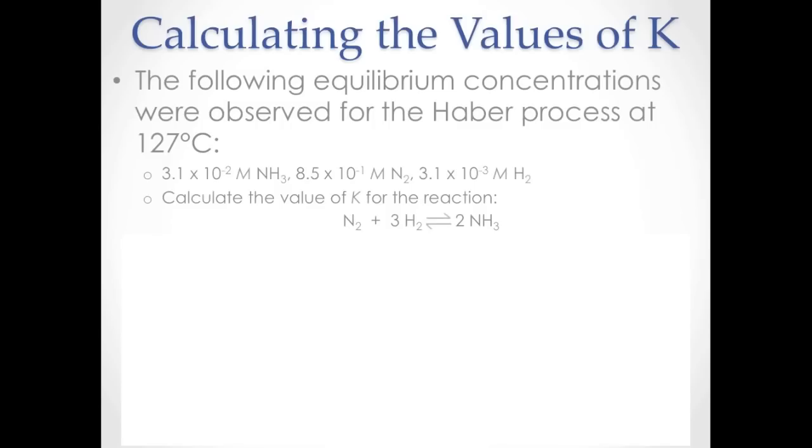Let's begin by calculating the equilibrium constant, K, for the Haber process at a temperature of 127 degrees Celsius, with these given equilibrium concentrations of ammonia, nitrogen, and hydrogen.